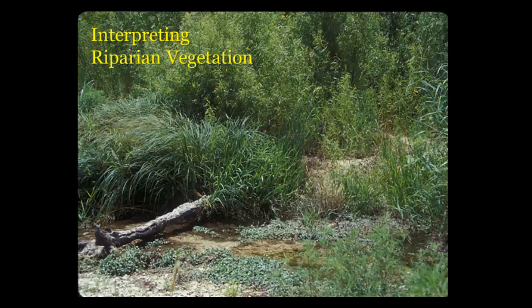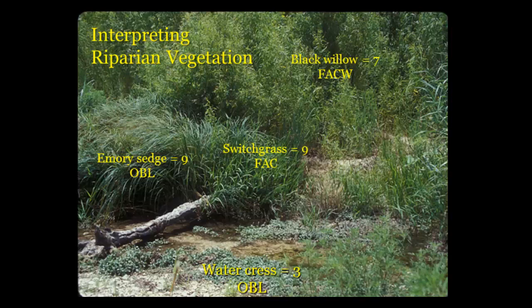For example, if you have a riparian area dominated by obligate and facultative wetland plants, that tells you something. It tells you that you're storing water underground, because those plants have to have that water table. So you don't have to go dig a hole with a post hole digger to see if water seeps in — you can just identify what plants you have. If they're obligate or facultative wetland plants, the plants are telling you you've got a riparian sponge, you're storing water. On the other hand, if your riparian area is dominated by more upland plants, that's telling you you're not storing water. We use it just as an indicator.